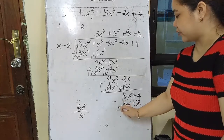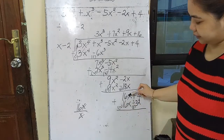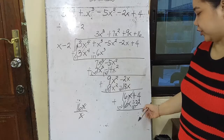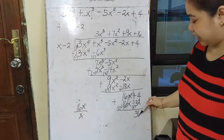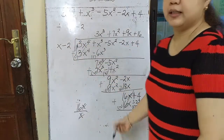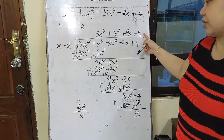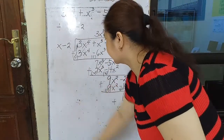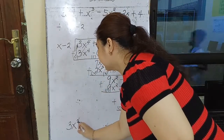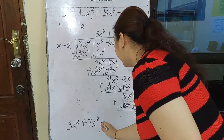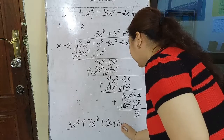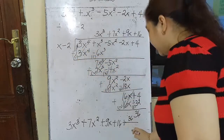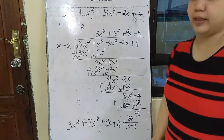So positive 16x: 16 times x is 16x, and 16 times negative 2 is negative 32. Then subtract, change the sign of the subtrahend, proceed to addition. Positive 16x plus negative 16x is 0. Positive 4 plus positive 32 gives 36. Since 36 cannot be divided by x, this is the remainder. The answer is 3x³ plus 7x² plus 9x plus 16, remainder 36 over (x minus 2).